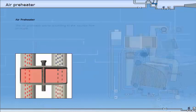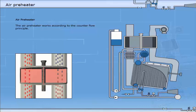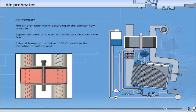The air preheater works according to the counterflow principle. Bypass dampers on the air and exhaust side control the flow. Exhaust temperature below 110 degrees centigrade results in the formation of sulphuric acid.